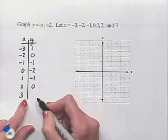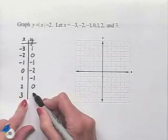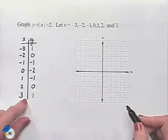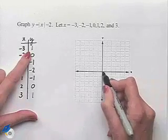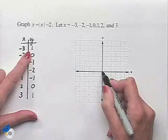The absolute value of 3 is 3, 3 minus 2 is 1. Now we're going to plot each of these points on our given screen. We have negative 3 comma 1. We'll start at the origin and move three units to the left and then one unit up and plot that point.